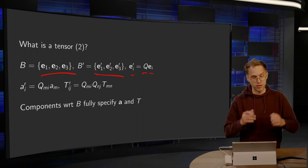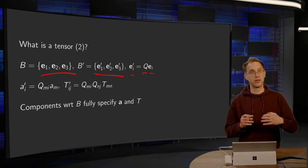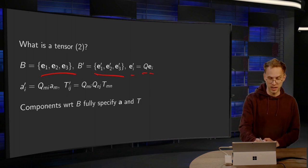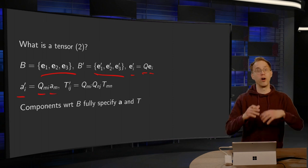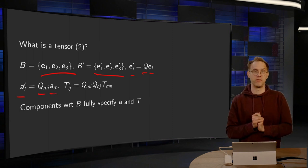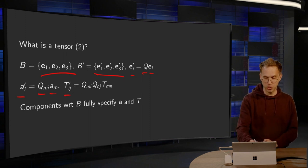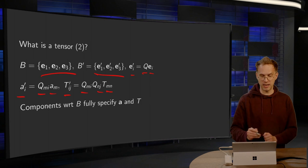And we have seen in previous lectures that we can compute the components of a tensor in a new basis by computing Tij' equals Qim Qjn Tmn.